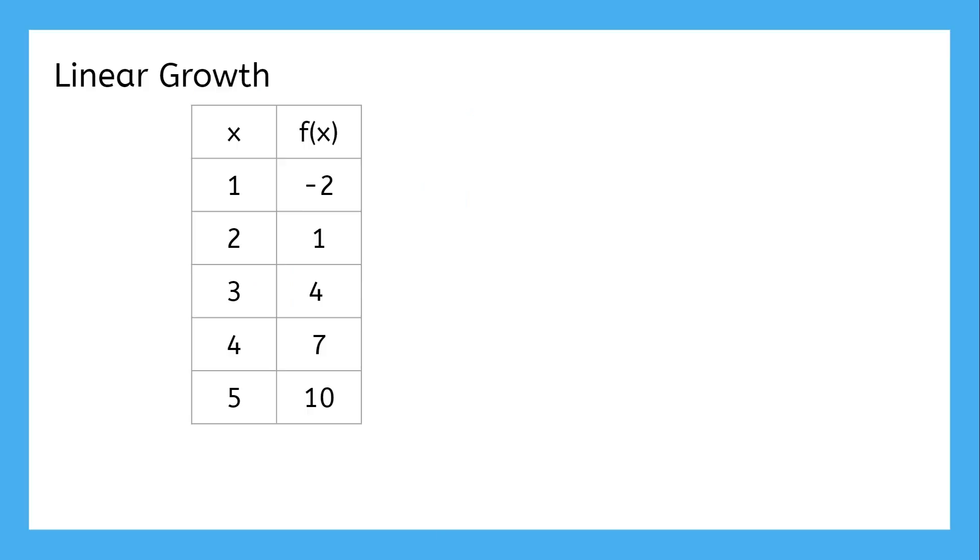This data shows a function growing linearly. We know it's linear because the slope is constant. For every interval, the slope is 3 over 1. Even if some values are missing, the data we do have will still carry that same slope. If the data has a constant slope, it's linear.